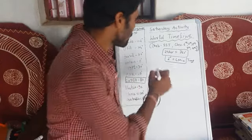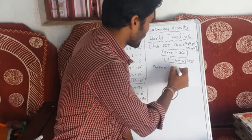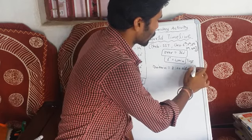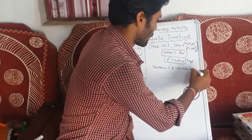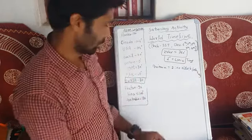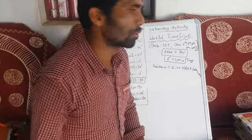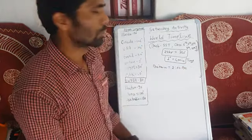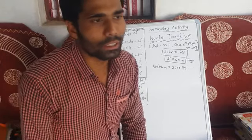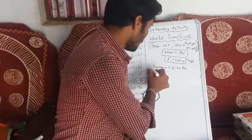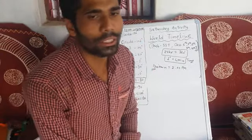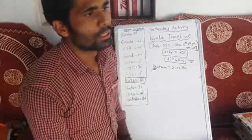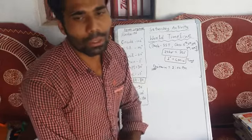Suppose in Britain the time is 2 o'clock in the afternoon, that means 2 PM. We always take Britain as our reference because the zero degree longitude passes through Britain.